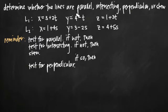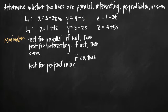Each of our two lines are defined by three parametric equations. L sub 1 is defined by parametric equations for x, y, and z, and L sub 2 is defined by three other parametric equations. For L sub 1, our parameter value is t — we have t in all three parametric equations. For L sub 2, we have a parameter value of s. That's going to be important later on.